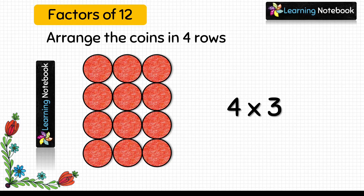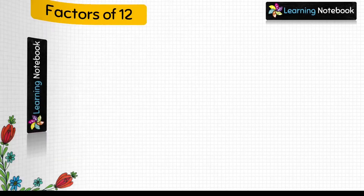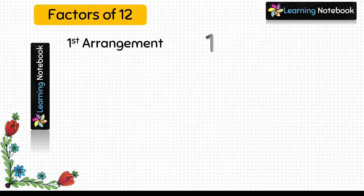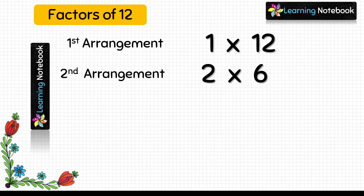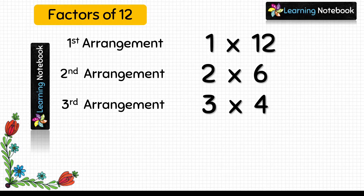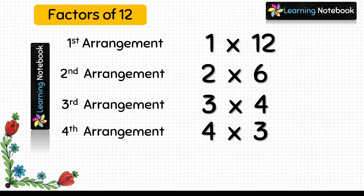But students, we have already covered it as a 3 into 4 arrangement, so it means we have to stop here. So now we have got four arrangements. First arrangement is 1 into 12, second is 2 into 6, third is 3 into 4, and fourth is 4 into 3. But since we have already covered 4 into 3 as 3 into 4, we will not consider this fourth arrangement.